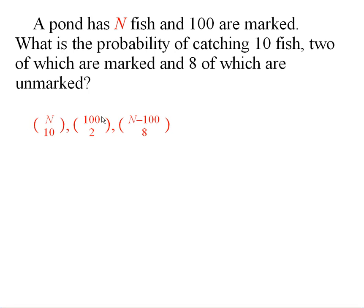What should it be? You have this number of ways of getting two marked fish. For each of those ways, there is this number of ways of getting eight unmarked fish. So the number of ways of getting two marked and eight unmarked would be the product of these two numbers.